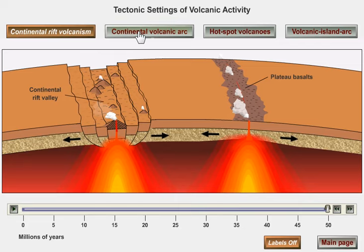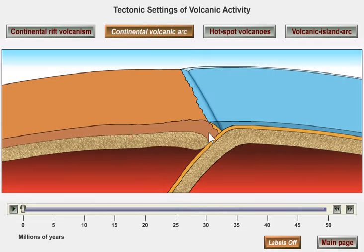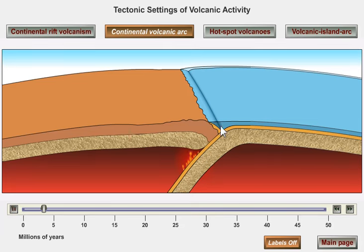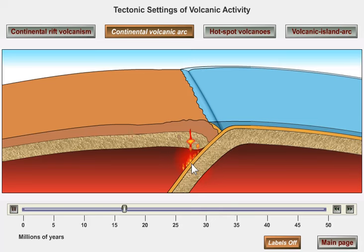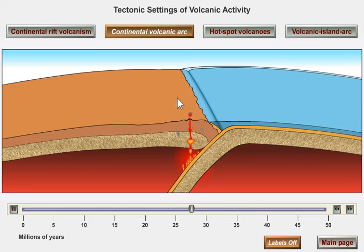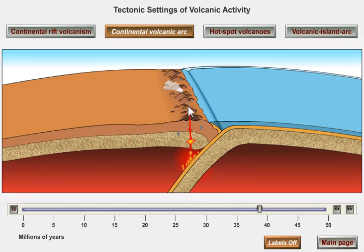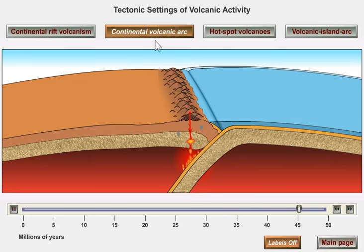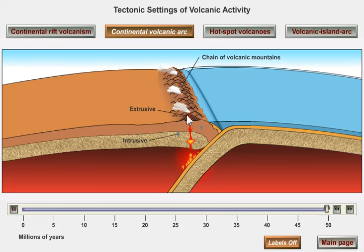More important even than that is the kind of volcanic activity associated with subduction. In this animation, we're going to subduct some ocean floor underneath the edge of a continent. As that happens, you get an ocean trench, but at a certain depth — about 80 miles down in the Earth — the subduction of the plate triggers melting of the mantle, and that magma rises and a whole series of volcanoes begins to pop up along the edge of the continent parallel to the trench. We call this a continental volcanic arc. The Andes Mountains are a classic example of such a system.